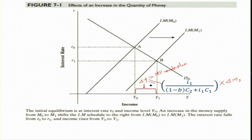You can see that because of the increase in money supply, output increases from Y-naught to Y-1. This del-Y is the monetary policy multiplier times the change in money supply.